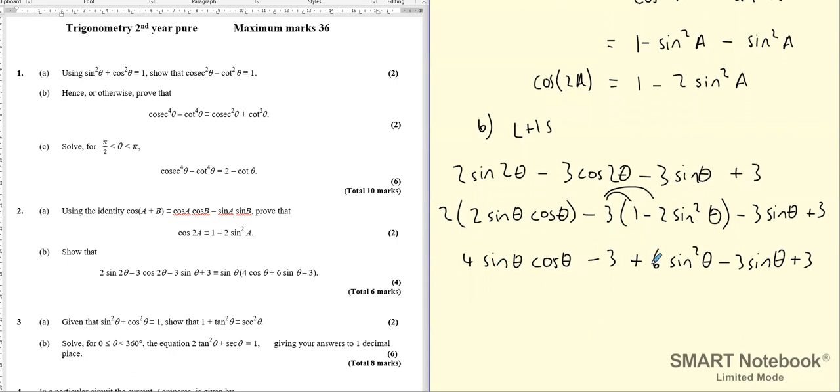And so now what we notice is that this minus 3 can cancel out this positive 3. And then we've got three remaining terms. Each one has a sin in it. So we can factorize sin now. As sinθ. So the first term is going to become 4cosθ. And then we've got plus 6sinθ minus 3, which is what is exactly the same as what is given to us on the right hand side. And that's the end of our proof.